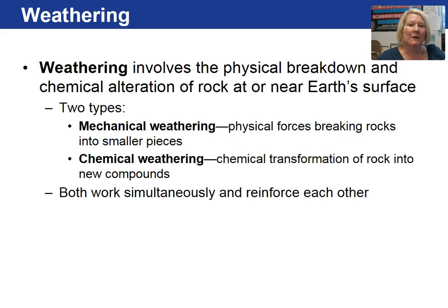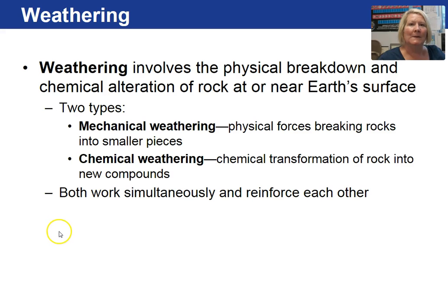I'm going to differentiate between two types of weathering. The first is mechanical weathering, where a rock simply gets broken down into smaller pieces with no change in their chemistry. The second type is called chemical weathering, where there is a change in the composition of the rock. Generally, both chemical and mechanical weathering are occurring at the same time.